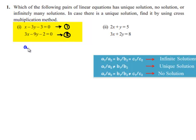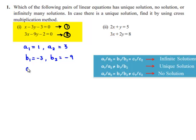So, a1 = 1, a2 = 3, b1 = -3, b2 = -3, c1 = -3, and c2 = -2.